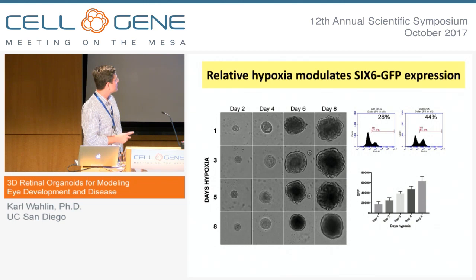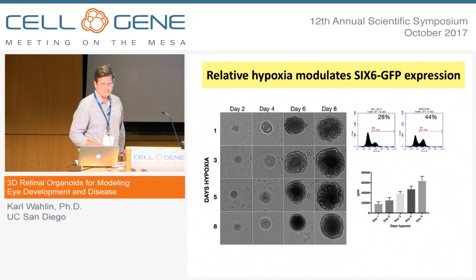There are clear morphological differences between structures. You see more vesicles with normoxia and fewer vesicles with hypoxia — but on the flip side, you actually get a lot more GFP signal with extended hypoxia.